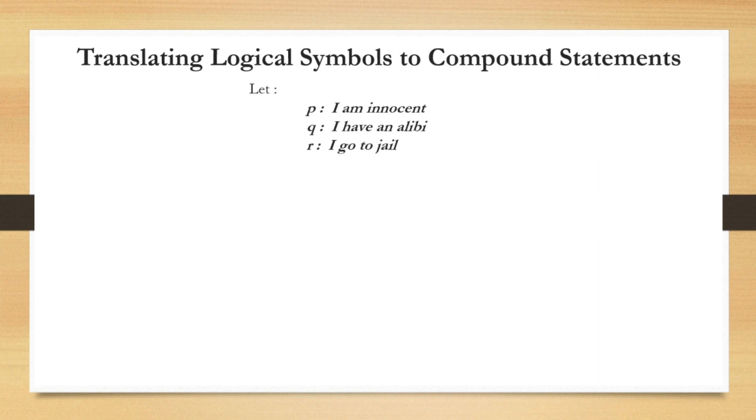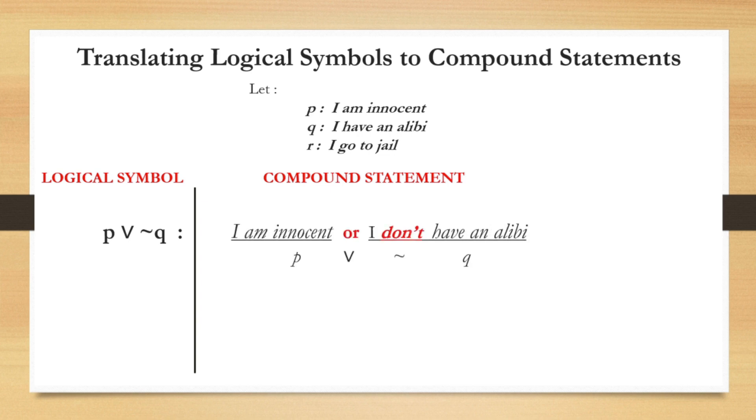The first symbol, P or negation Q. So when we are going to translate this into a sentence or statement, I am innocent or I don't have an alibi.